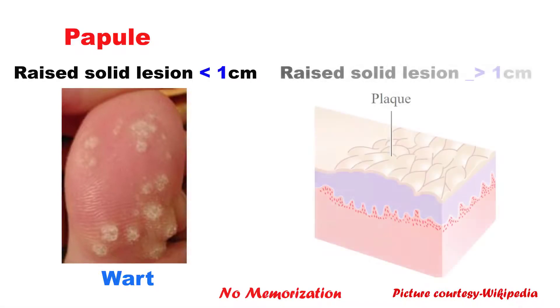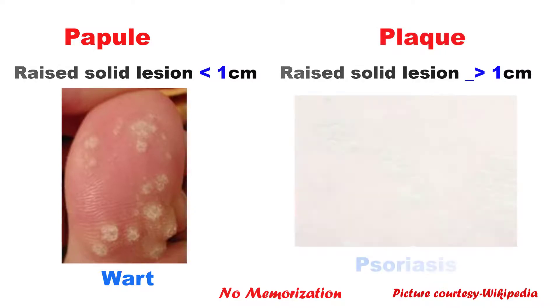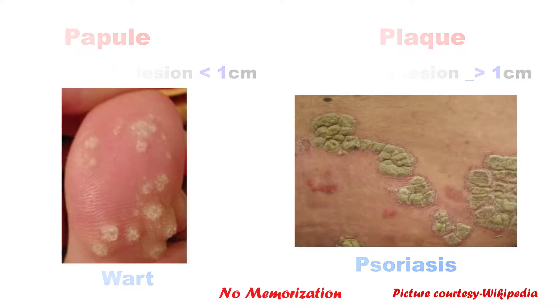When the same lesion is equal to or more than 1 cm, it is called plaque. A good example is psoriasis.